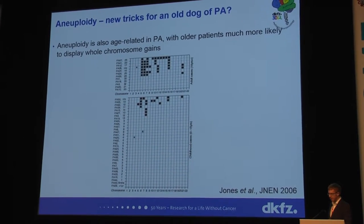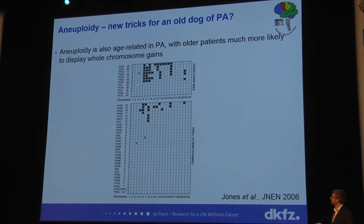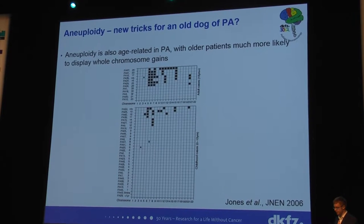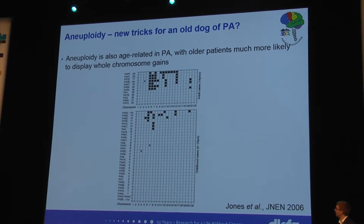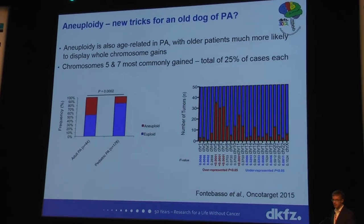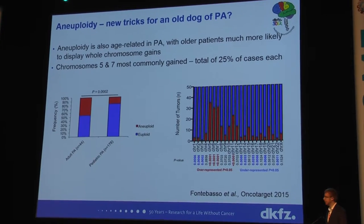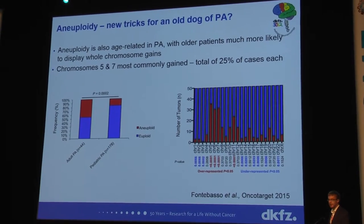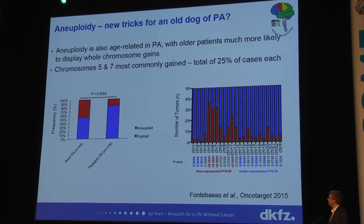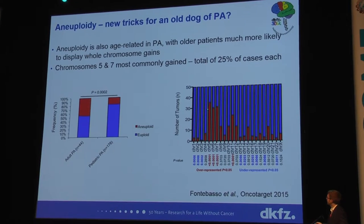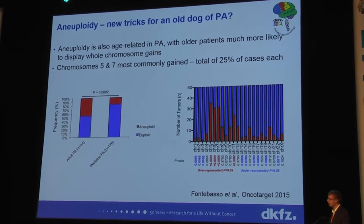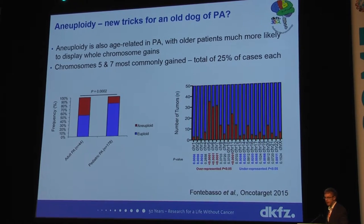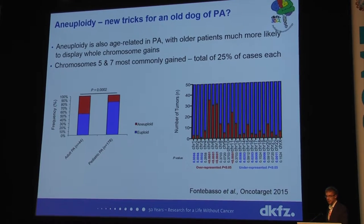One other aspect we've known about for a while is this high degree of aneuploidy, particularly in older patients — above the age of 16, you're much more likely to see copy number profiles with gains of whole chromosomes. When we now take a much larger series and look at this in more detail, it's again clear that adult pilocytic astrocytoma display this pattern much more frequently than the pediatric cases. And it's certainly not a random distribution — chromosomes 5, 6, 7, and 11 are much more commonly altered in these aneuploid cases, while some chromosomes are significantly de-enriched for alterations.